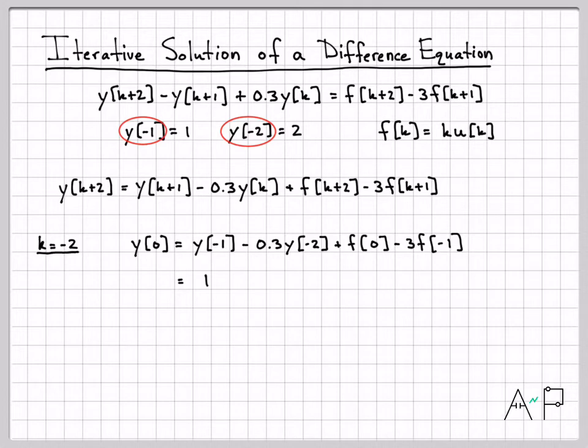Y of minus one was equal to one, and Y of minus two was equal to two. What about my inputs? My input at time zero is actually equal to zero, because when K is zero, I get a zero right here. And when K is negative one, I get the unit step function evaluated at that time is zero. So I get three times zero here as well. If you simplify that, we get one minus 0.6 plus zero plus zero, and that is equal to 0.4.